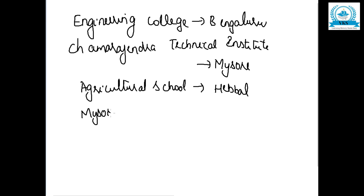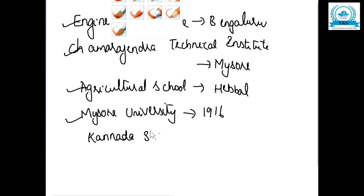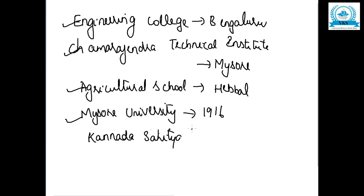The most important achievement of Sir M. Vishweshwaraya was the establishment of Mysore University in 1916 — this was his greatest achievement in educational reform. He also established the Kannada Sahitya Parishat, which was established in 1915.